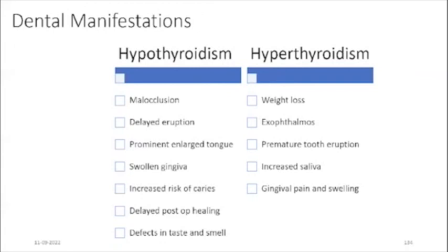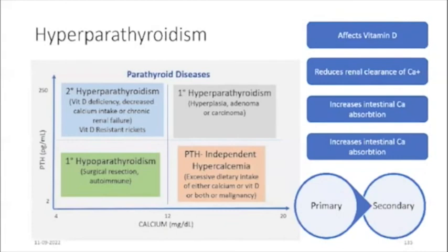In hyperthyroidism, features include weight loss, exophthalmos, premature tooth eruption, increased saliva, and gingival pain and swelling. Regarding hyperparathyroidism — it affects vitamin D in the blood, reduces renal clearance of calcium levels, and increases intestinal calcium absorption. Parathyroid diseases can be primary hyperparathyroidism or secondary hyperparathyroidism. Primary is due to hyperplasia, adenoma, or carcinoma of the parathyroid glands.